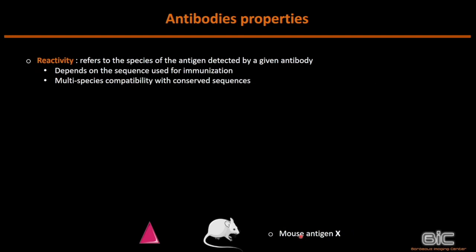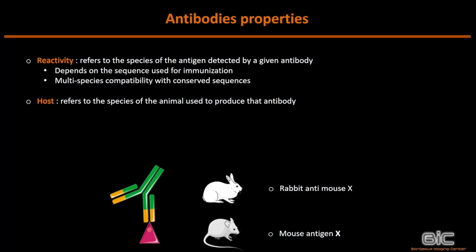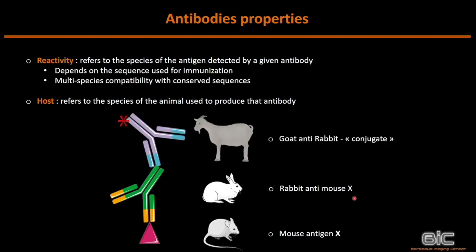Some properties define the way we name antibodies. Reactivity refers to the species of the antigen detected by the antibody, depending on the sequence used for immunization. The primary antibody is defined by its host — the species used to make the antibody — then 'anti,' the reactivity, and the antigen. The secondary antibody is specified by its host, the anti-species, and the conjugate. For example: rabbit anti-mouse antigen X as primary, and goat anti-rabbit Alexa 647 as secondary for light microscopy.